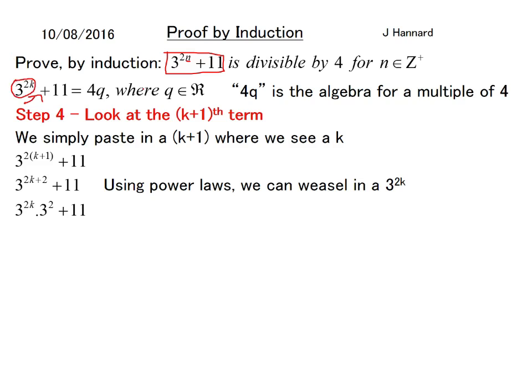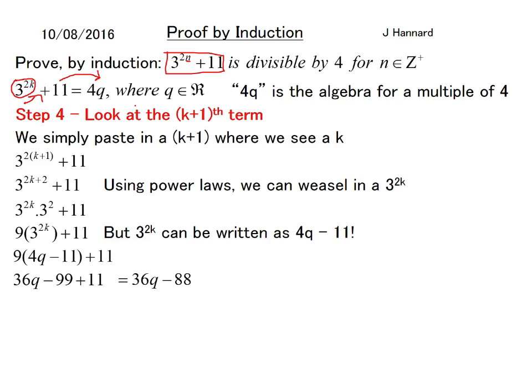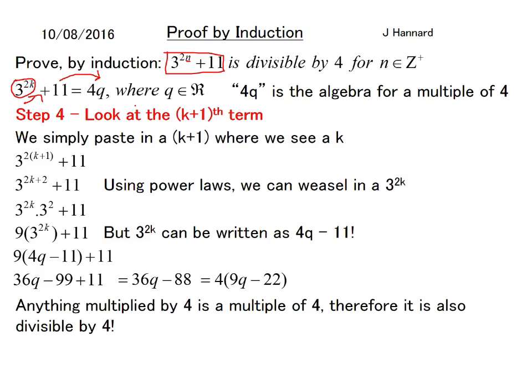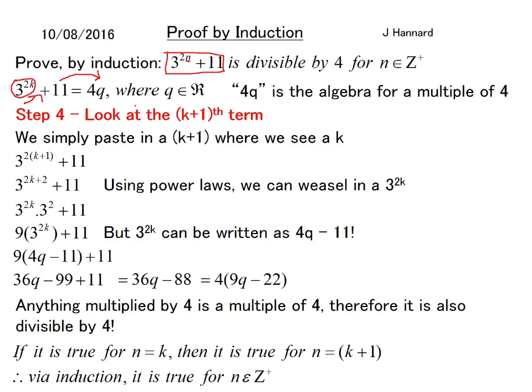And you might be able to see where this is going. So that is the same as 3^(2k) times 3 squared using power laws, plus 11. And 3 squared is 9. So it's 9 lots of 3^(2k) + 11. But 3^(2k) can be replaced by 4q minus 11. So there you go. Now you just expand like that, tidy up. See if you can weasel out a four. You can. So it's 4 times 9q minus 22. And anything multiplied by 4 is a multiple of 4. So it's therefore divisible by 4. And if it's true for n equals k, then it's true for n equals k plus one. Therefore, via induction, it is true for any positive real integer. And I'll be back in just a second.